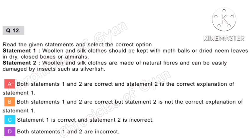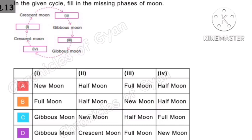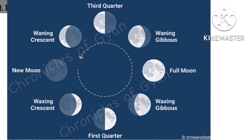Question 13. In the given cycle, fill in the missing phases of the moon. Correct answer is option A.